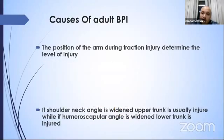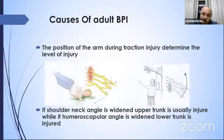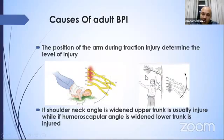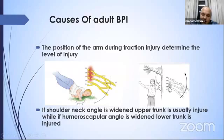The position of the arm during traction injury determines the nerve injury level. If the shoulder-neck angle is widened, the upper trunk is usually injured. If the humero-scapular angle is widened, the lower trunk is injured. For example, if the neck-shoulder angle is widened — as in a fall on top of the shoulder while hanging from a tree branch — the upper trunk is usually injured. If the humero-scapular angle is widened, this results in injury of the lower trunk.